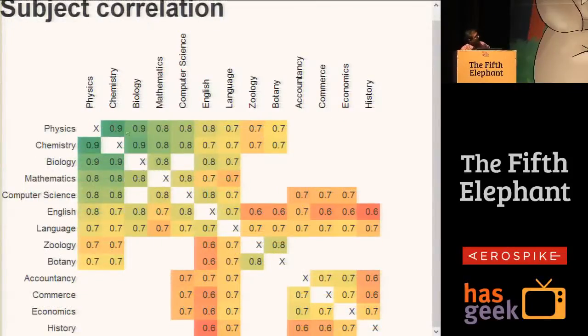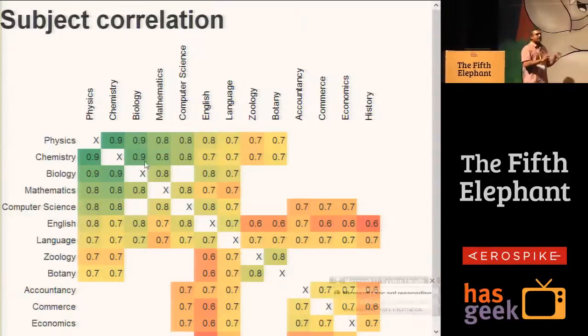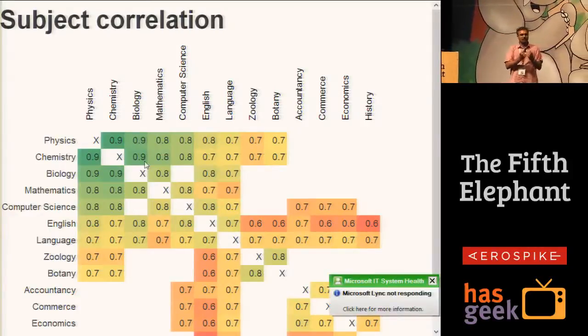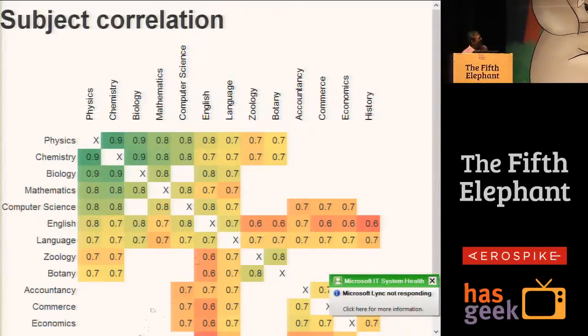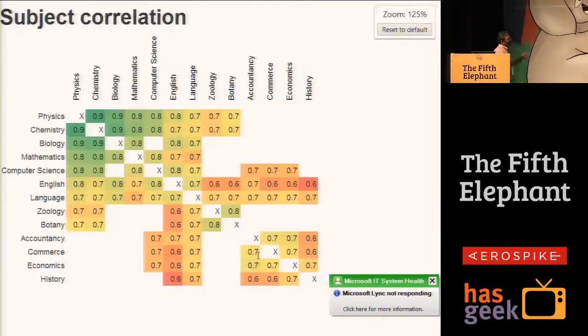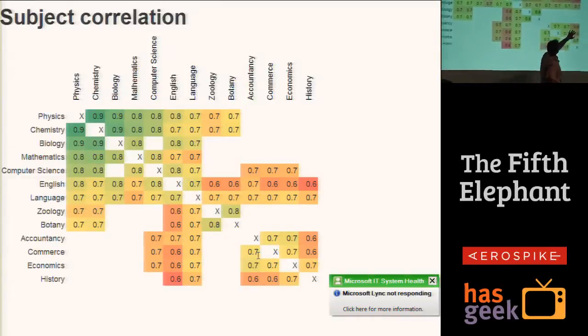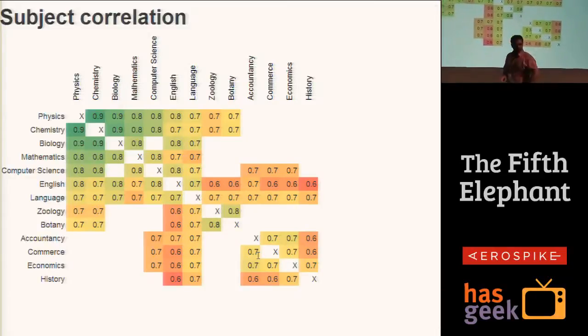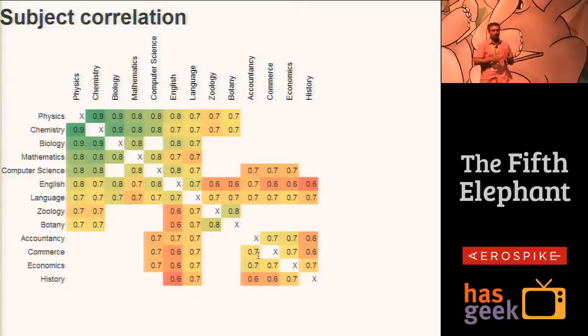Physics has a fairly high correlation with chemistry. That makes sense. Reasonably high correlation with biology, with mathematics. It's almost like there's this block of subjects: Physics, chemistry, biology, mathematics, and computer science. All of which have a 0.8 correlation with each other, which means that you do well in any one of these subjects, you tend to do well in all of the others. It's almost like the sciences have something in common within them that if you get it right, you will do well. And if you don't get it right, you will not do well. Whereas, if you look at the other subjects, English, zoology, botany, accountancy, these have relatively lower correlations between themselves.